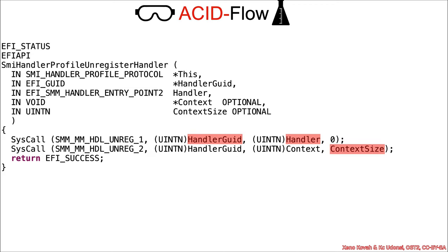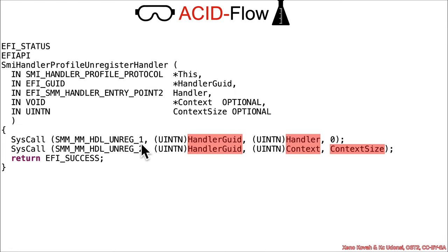So this handler — the handler GUID, context size, context, and handler GUID — there are going to be two system calls, each of which has a different type. The first is unreg1 and the second is unreg2.